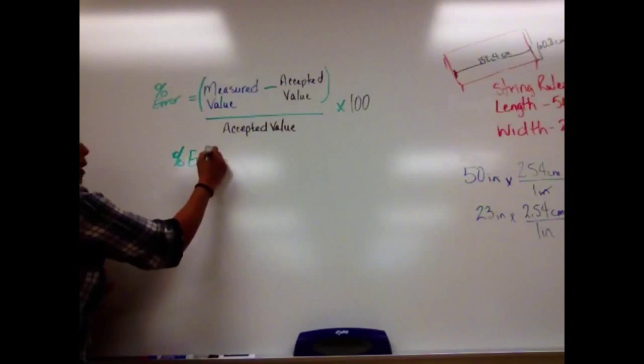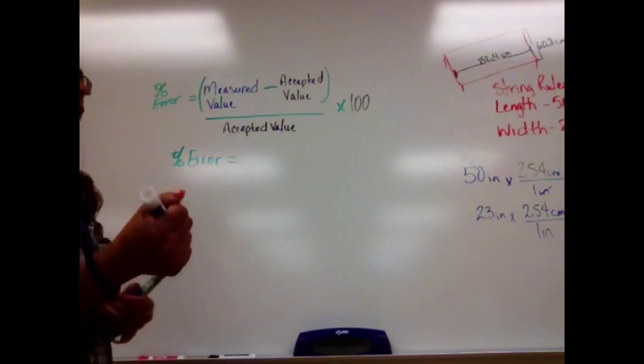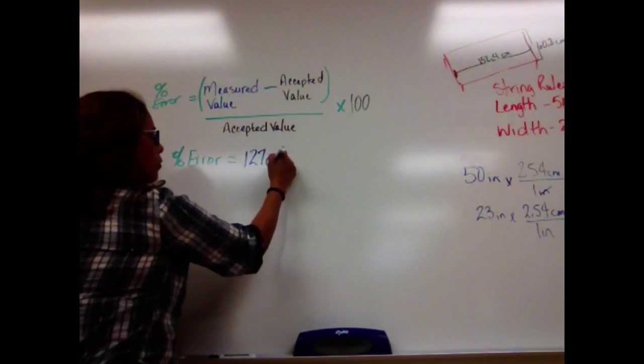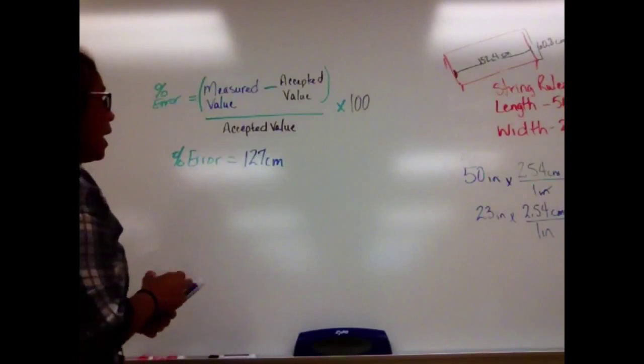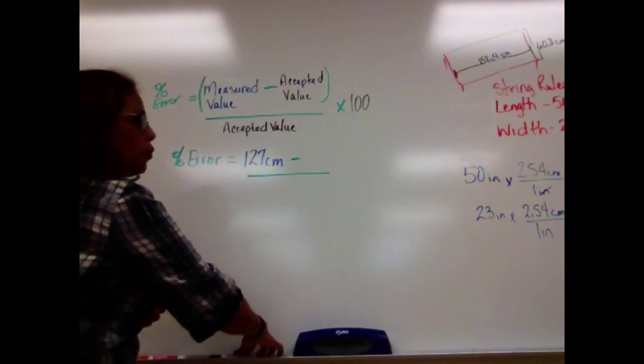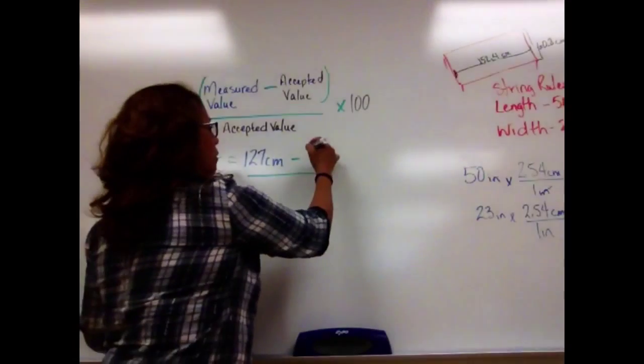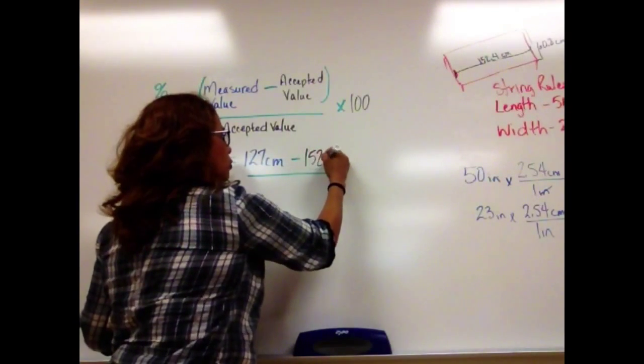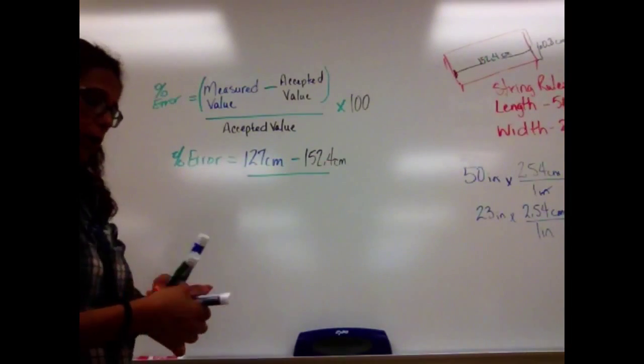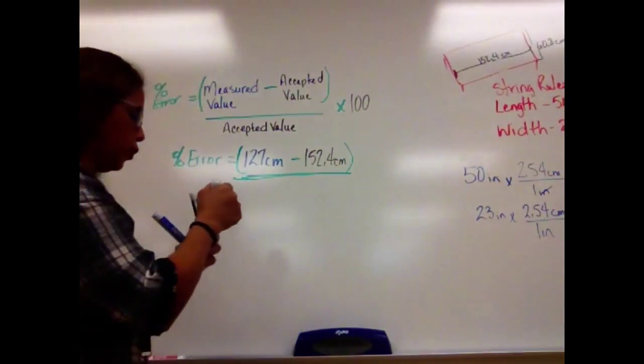So percent error is equal to my measured value. Well, my measured value in my actual experiment was 127 centimeters. My accepted value is when you literally measure it with an actual meter stick or measuring in meters is 152.4 centimeters. So we already see a variation in our numbers. So again, we need to follow order of operations, so we would subtract those two first.